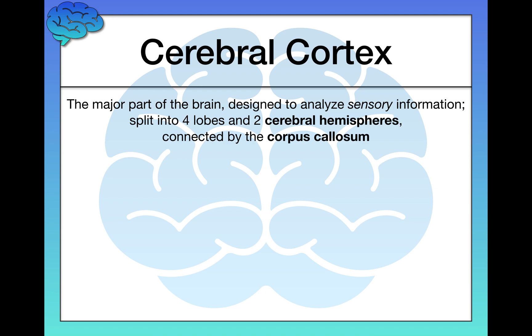The cerebral cortex is split into four different lobes and two cerebral hemispheres — your right and left hemisphere. You may have heard of the right brain versus left brain distinction, though there's actually not a lot of evidence for that. The right and left cerebral hemispheres are connected by the corpus callosum, which is essentially a band of fibers connecting the two hemispheres, located right in the middle.